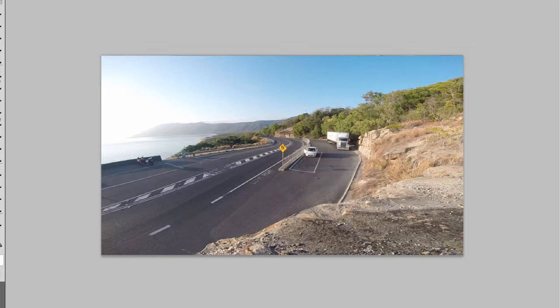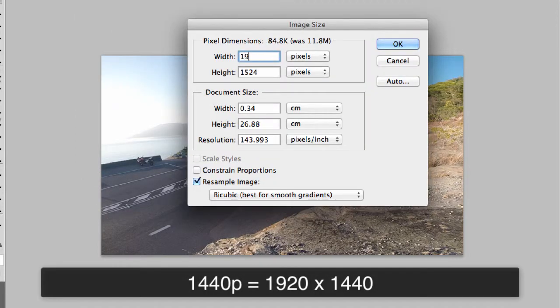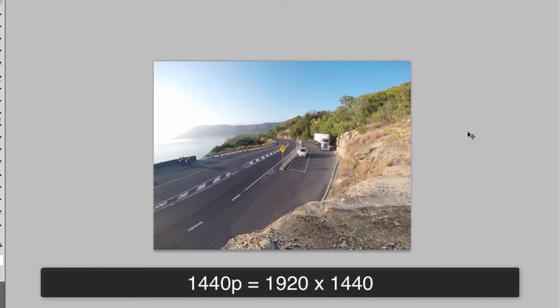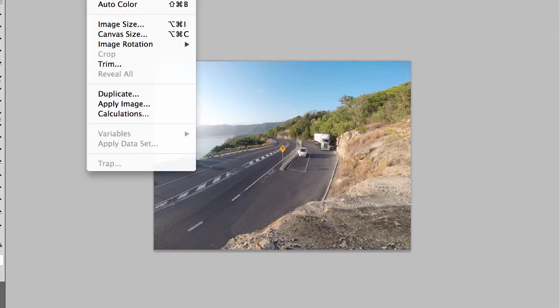The next setting is 1440p, which is 1920 wide by 1440 high — hence the name — and has a ratio of 4 to 3. Notice we're getting close to the square shape. When you see the 4 to 3 ratio in GoPro instruction booklets, those settings are much more square, whereas 16 to 9 and 17 to 9 have more of a widescreen view, much closer to what you would see with the naked eye.